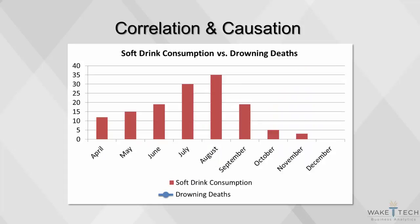Correlation can also be high because both variables move together due to a missing third variable. For example, consider deaths due to drowning and soft drink consumption during summer. Both variables are related to heat and humidity — a third variable not shown. Omitting such variables can be dangerous.